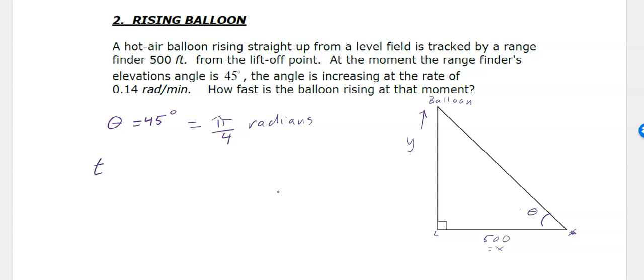How do I relate this angle to this height? It's a right triangle, so you can use right triangle trigonometry. The tangent of θ is going to be whatever the height is divided by 500. So as the height goes up, the tangent of θ goes up.